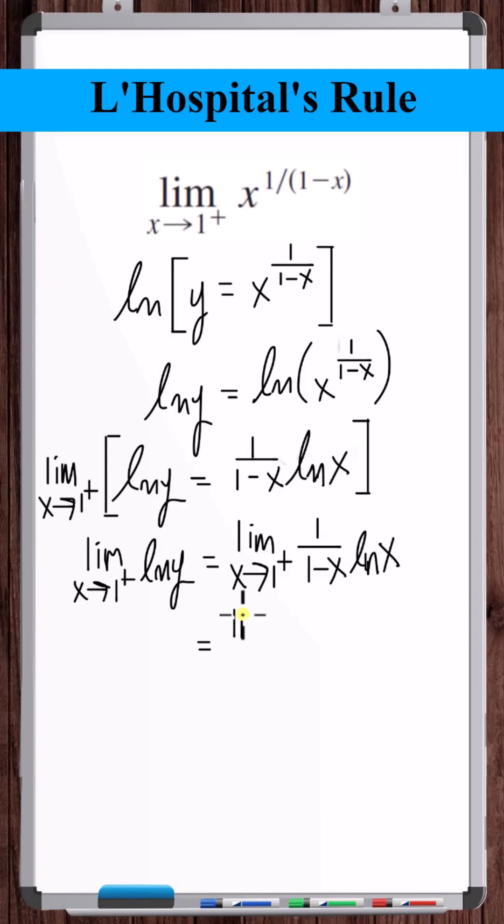Let's write this as a quotient. So bringing this into the denominator, we get plugging in 1, natural log of x goes to 0. 1 minus x goes to 0, so this goes to 0 over 0.